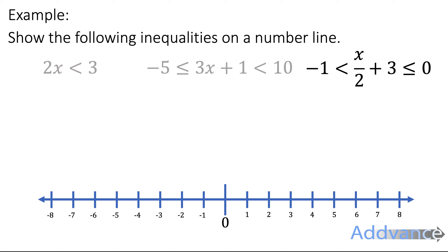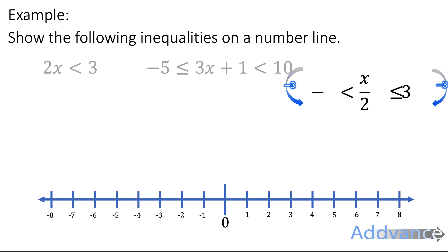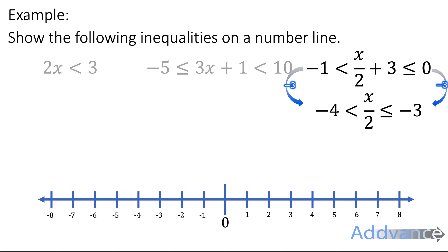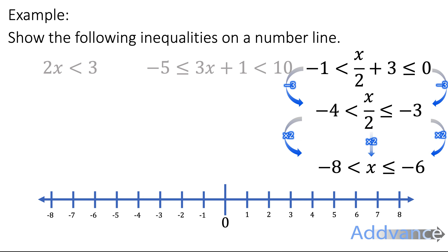Finally for this set: minus 1 is less than x divided by 2 plus 3, which is less than or equal to 0. We start by subtracting 3 from all three sides: minus 1 minus 3 is minus 4, x over 2 plus 3 minus 3 is x over 2, and 0 minus 3 is minus 3. Then we multiply everything by 2 to get rid of the divide by 2, giving minus 8 is less than x is less than or equal to minus 6, which looks like this on the number line.